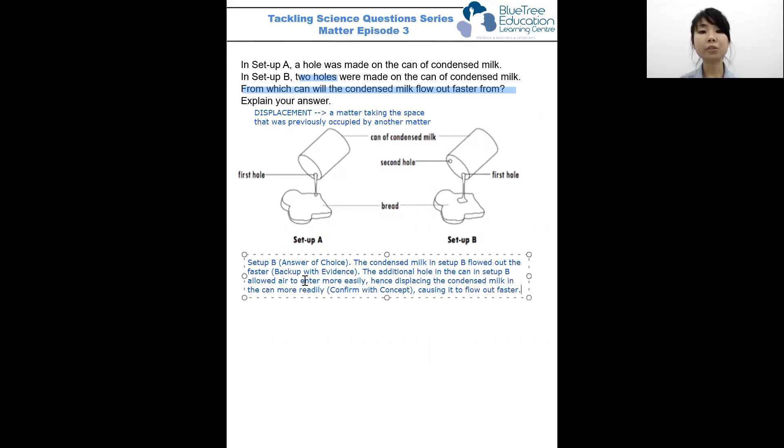So, answering with choice, which can will the condensed milk flow out faster from? It will be setup B. My evidence will be condensed milk in setup B flows out faster.